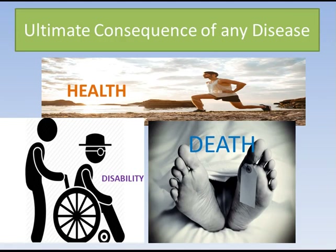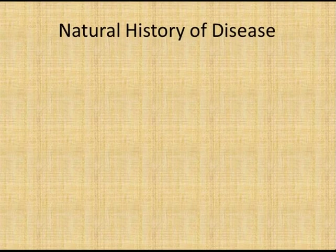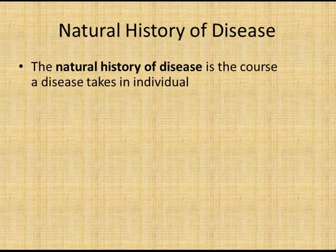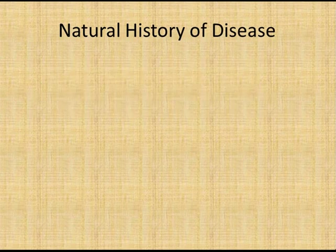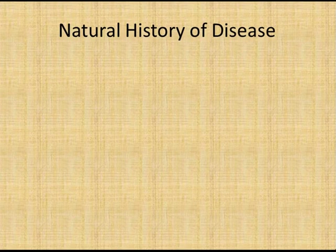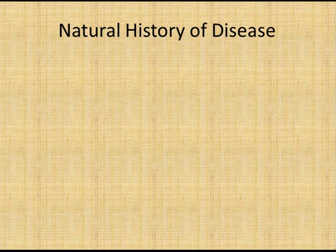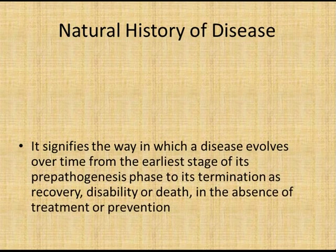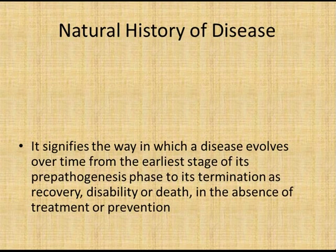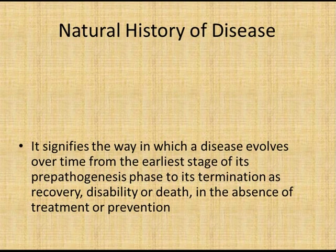Now we move forward to learn the concept of natural history of disease. The natural history of disease is the course a disease takes in individual people from its pathological onset until its eventual resolution through consequences. In other words, it signifies the way in which a disease evolves over time from its earliest stage — the pre-pathogenesis phase — to its termination as recovery, disability, or death, in the absence of treatment or prevention.